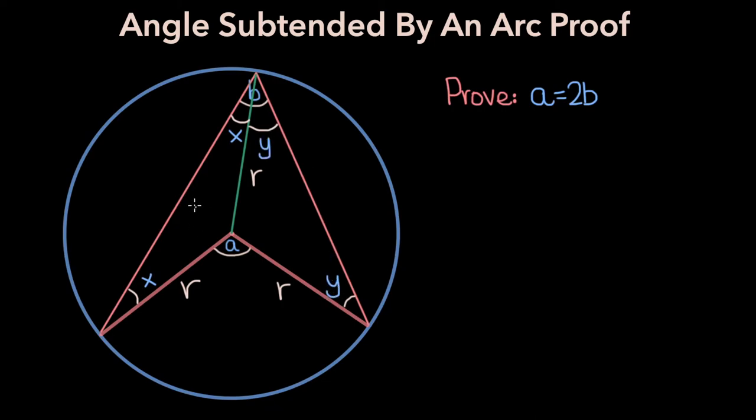The sum of the angles in a triangle is 180 degrees. So this angle must be 180 minus 2X, and this angle here must be 180 minus 2Y.